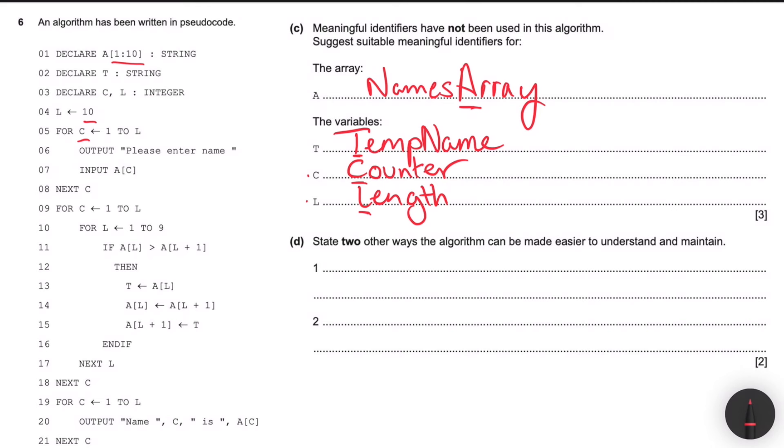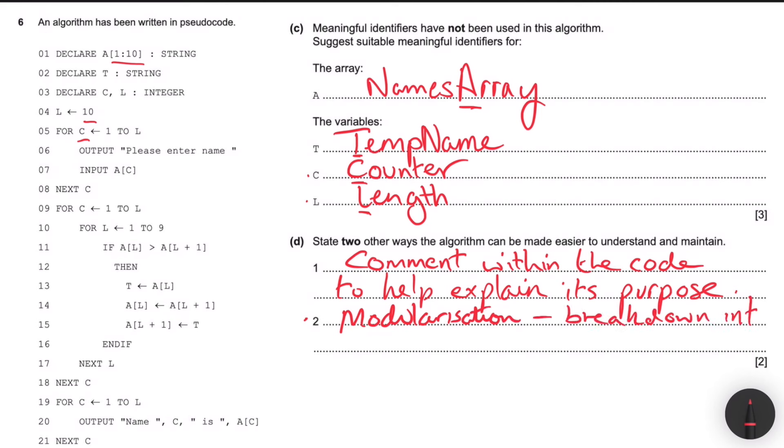State two other ways the algorithm can be made easy to understand and maintain. Well, we know this. It should be comments within the code to help explain its purpose. The next bit, we could break this down into smaller parts. We could use decomposition and break it down into procedures or functions. So I'm going to use something called modularization - break down into smaller parts, e.g. functions or procedures. So that's it for question six.